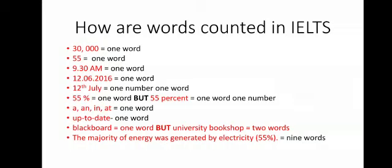Prepositions and articles are counted as one word each — for example: a, an, the, in, at. A hyphenated word is counted as one word. A compound word consisting of two words — for example, 'blackboard' — is counted as one word. But if there are two separate words defining a compound, like 'university bookshop,' that counts as two words. Looking at a sample sentence: 'The majority of energy was generated by electricity and we have 55% (in brackets)' — that gives nine words, because words and numbers written in brackets are also counted as words.